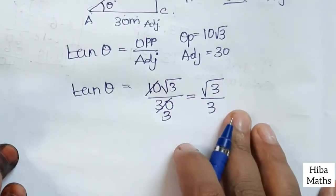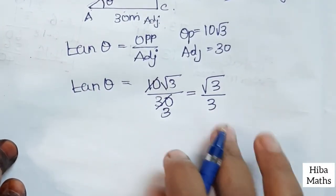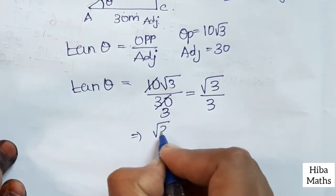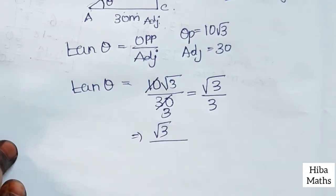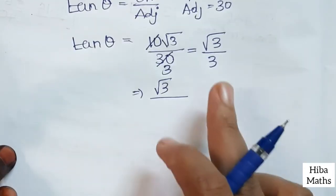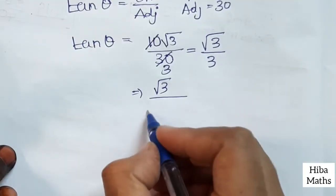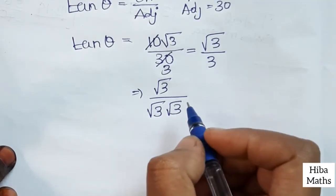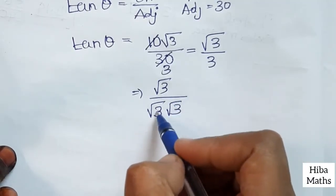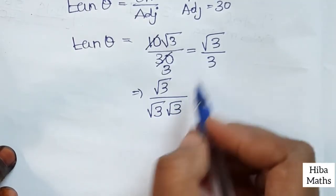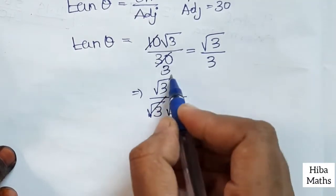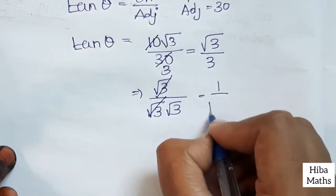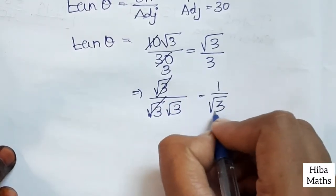How do you convert root 3 by 3? Root 3 divided by 3 — since 3 equals root 3 into root 3, the root 3 cancels, leaving 1 by root 3. So tan theta equals 1 by root 3.